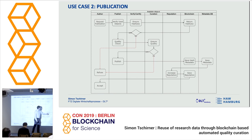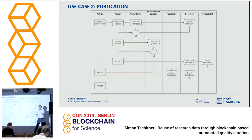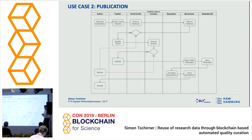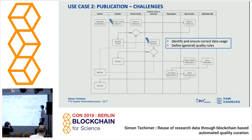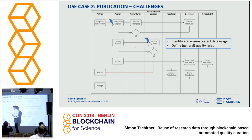You save the hash and the relevant metadata. For these experiments, it could be important what temperature was used when results were obtained, so we create a hash of this important metadata. When you want to reuse the data, you can be sure that this environment is preserved. Then we go to reputation management and increase the reputation. A challenge is that we need to identify the used data and somehow extract whether it was really used.